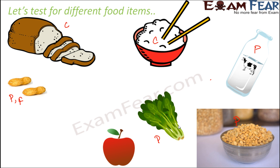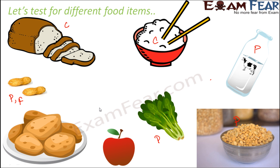In the case of apple, the starch test comes out negative, showing that apple doesn't contain carbohydrates — this is an example of a negative test. Similarly, spinach gives a negative test for fat. Potato is again rich in carbohydrates, so it gives a positive starch test.